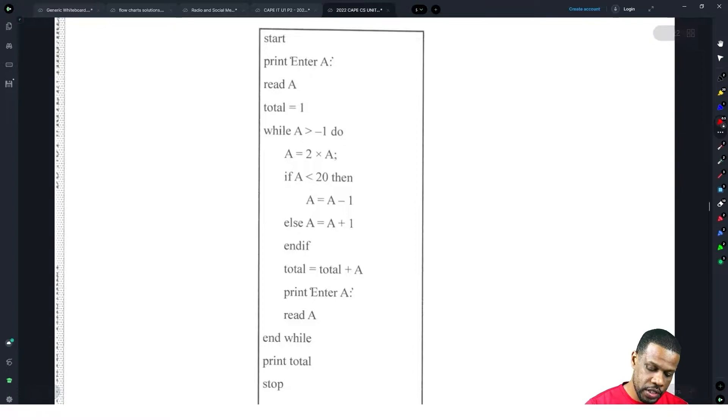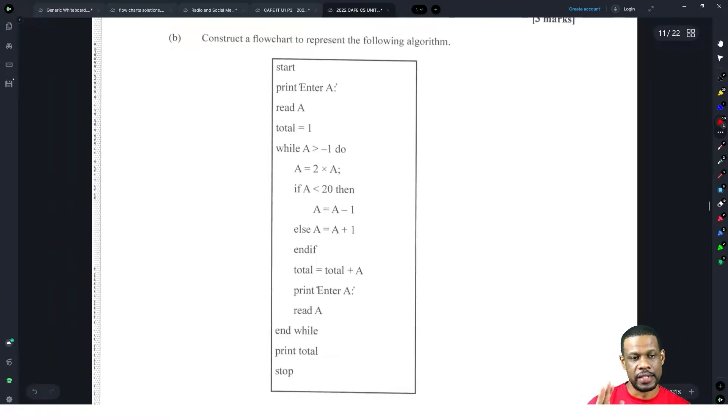Usually when they have these flowcharts you have to follow exactly how they put the algorithm because they mark it based on a one-to-one kind of lineup. So start be there. I'm going to pull it to the left a little bit. Start is there, you want to print Enter A, so that's a parallelogram.